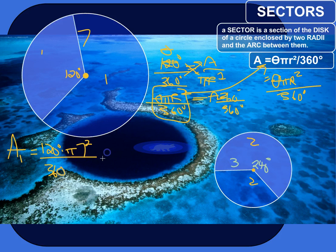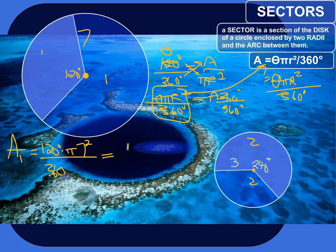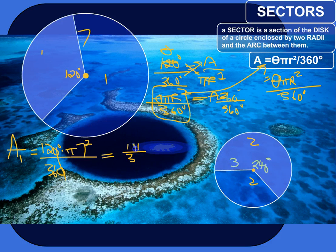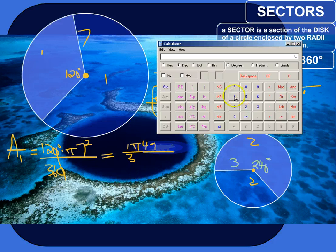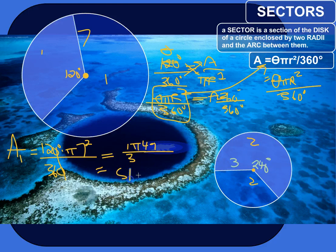Let's clean this up. 120 divided by 360 is just one-third — think of it as 12 divided by 36, which reduces to one-third. So we have 49 times pi, divided by 3. Jumping to the calculator: 49 times pi divided by 3 gives us about 51 units squared as the area of that sector.